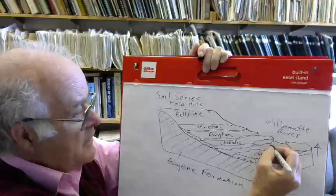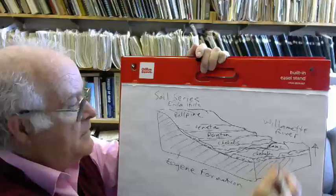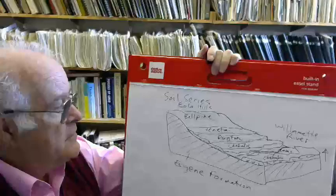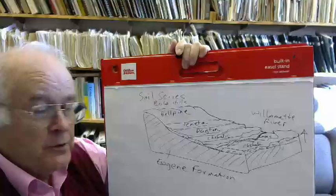For example, Belpine, Veneta, Dayton, Chehalis, and Camas down in here in the very bottom, in areas that are away from the river itself. These soil series are named after localities. These are places in the valley where that soil was first dug.